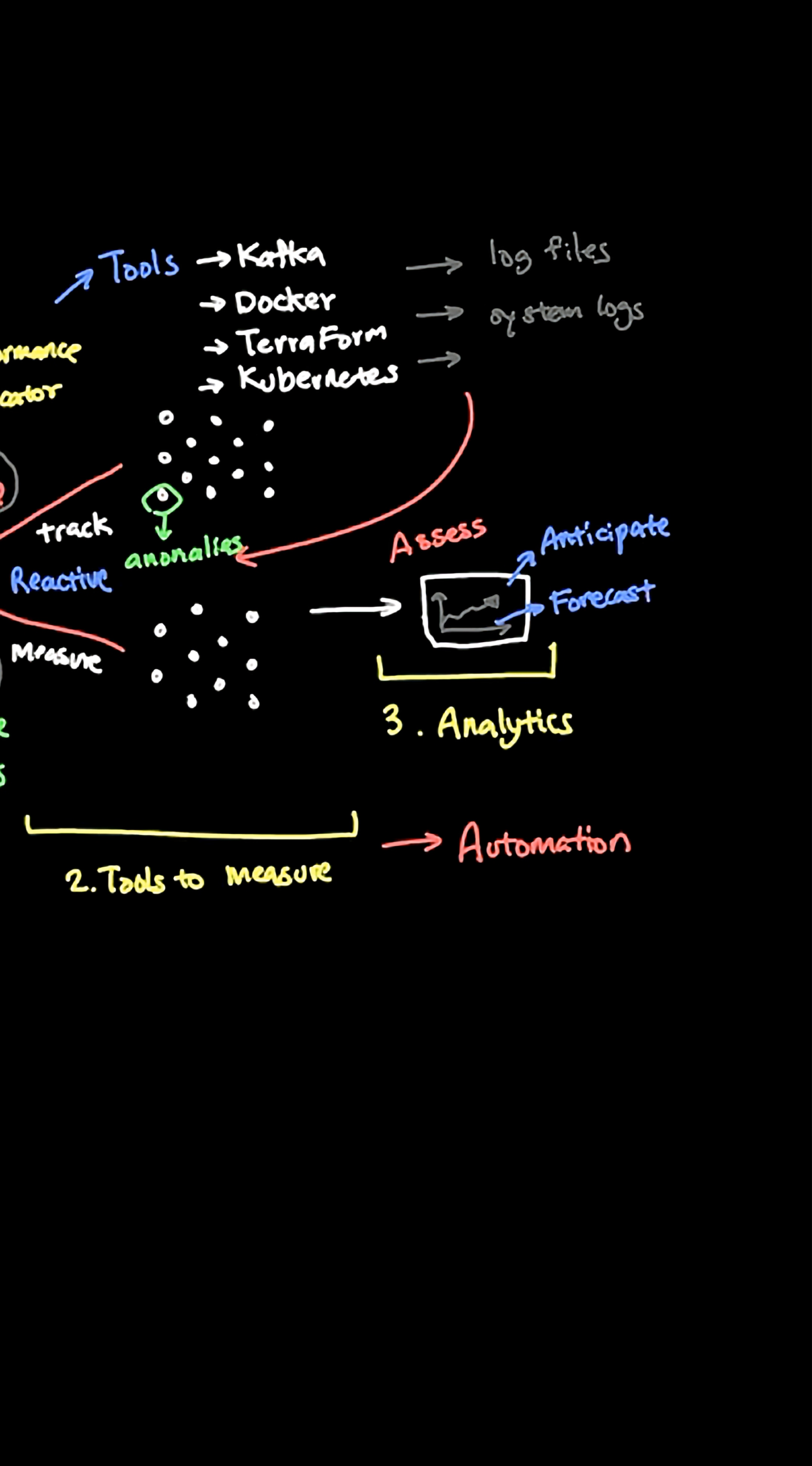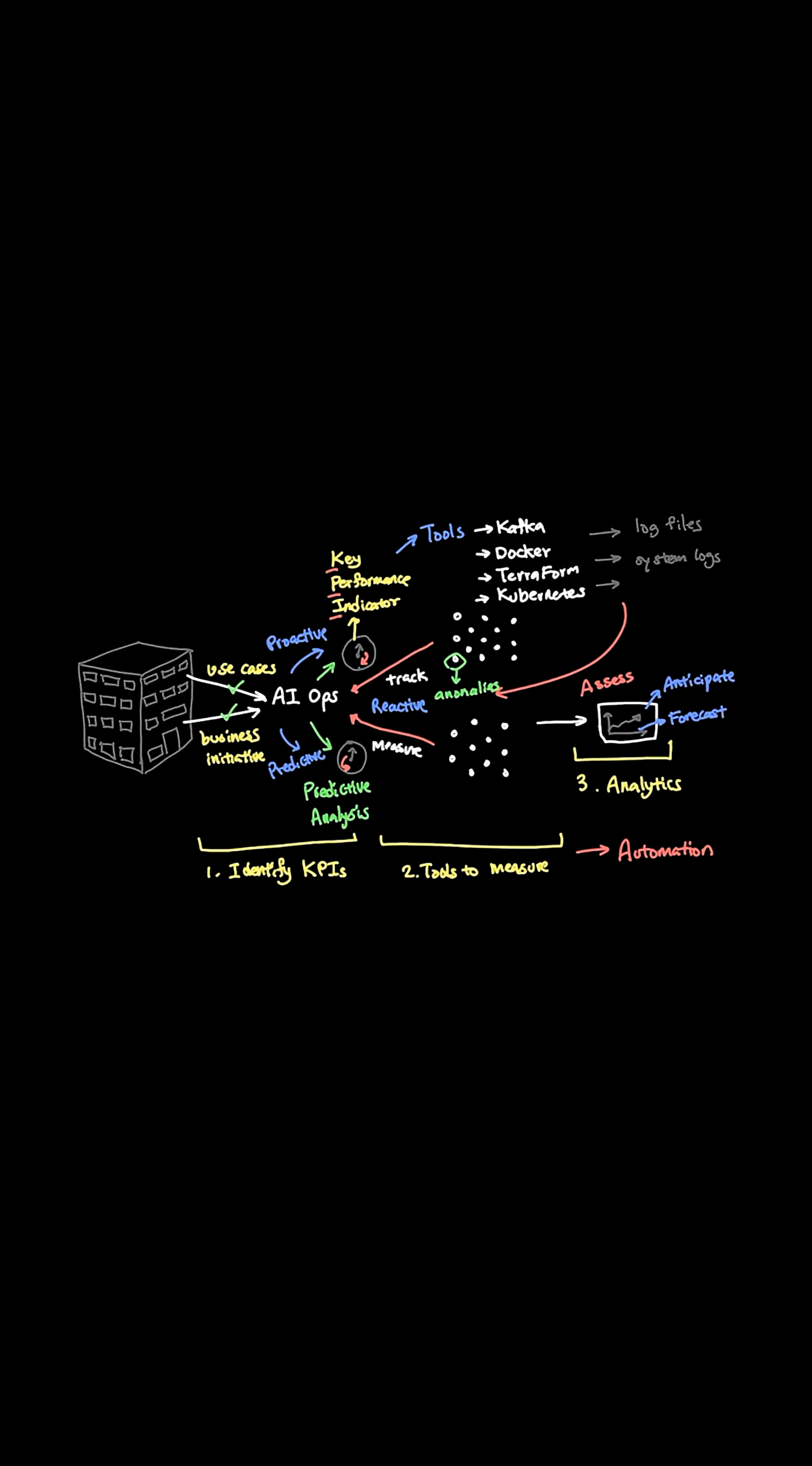So instead of being reactive, you are transforming your environment to be more adaptive. As you can see, we're moving our system from this natural progression from reactive to proactive, to predictive, to prescriptive, and finally automation.